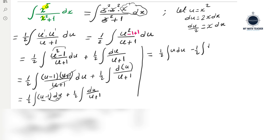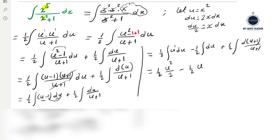So we have: one half integral of u du, minus one half integral du, plus one half integral of 1 over u plus 1 du. The integration of u is u squared over 2, so the first term gives u squared over 4. The second term gives minus one half times u. The third term gives one half times natural logarithm of u plus 1, plus a constant.